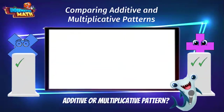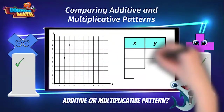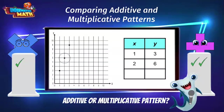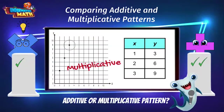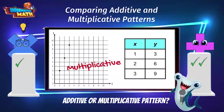Next question, is this an additive or multiplicative pattern? Yes, Milton. I'm positive that this is multiplicative. Can you elaborate on how you know this to be true? Each x value can be multiplied by 3 to create the corresponding y value, so it has to be a multiplicative pattern. Brilliant, Milton. It looks as though we have a tie.